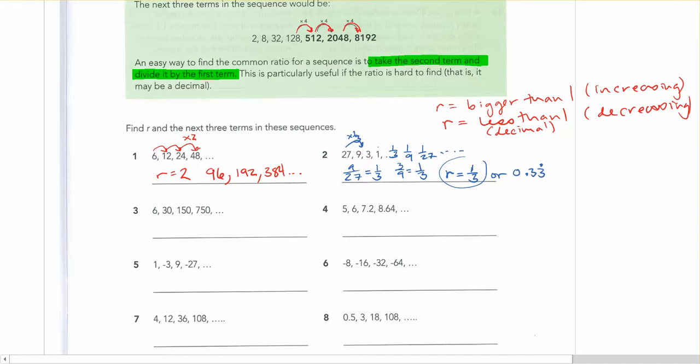So again if you're not sure what your r is by looking at it, take the second term, put it on top of the first term. So 30 over 6 gets you 5. That will be equal to r.